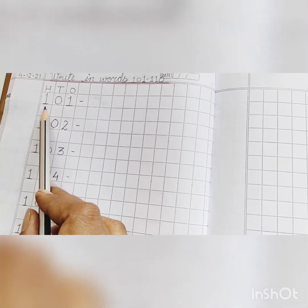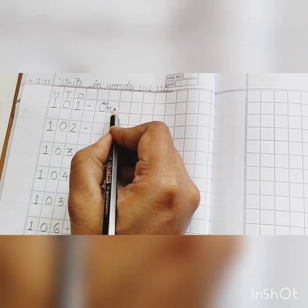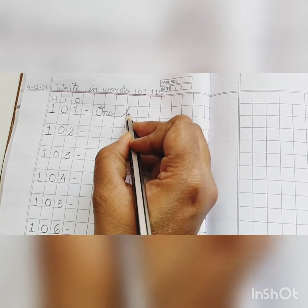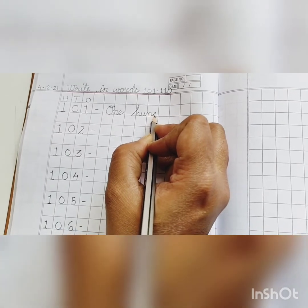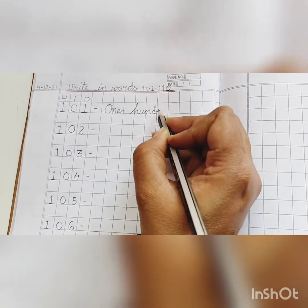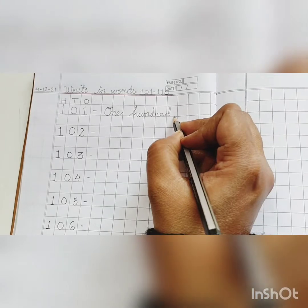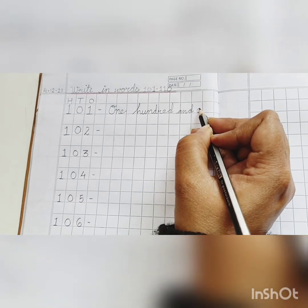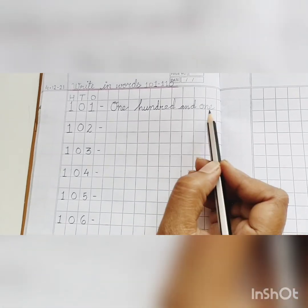Let's start. One hundred and one. O-N-E, One, H-U-N-D-R-E-D, 100, A-N-D and O-N-E, 1. One hundred and one.